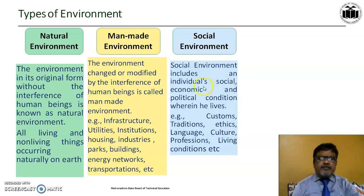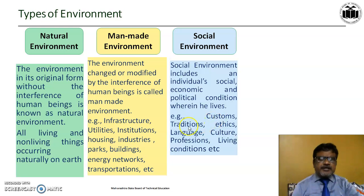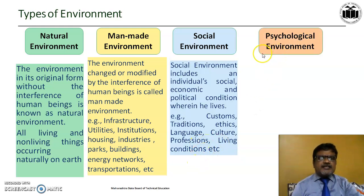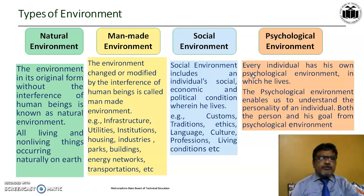Man is a social animal. The social environment includes social, economic, and political conditions where humans live. This includes customs, traditions, ethics, languages, culture, professions, and living conditions. The last type is psychological environment, which enables us to understand the personality of an individual — both the person and his goal — from his psychological environment.